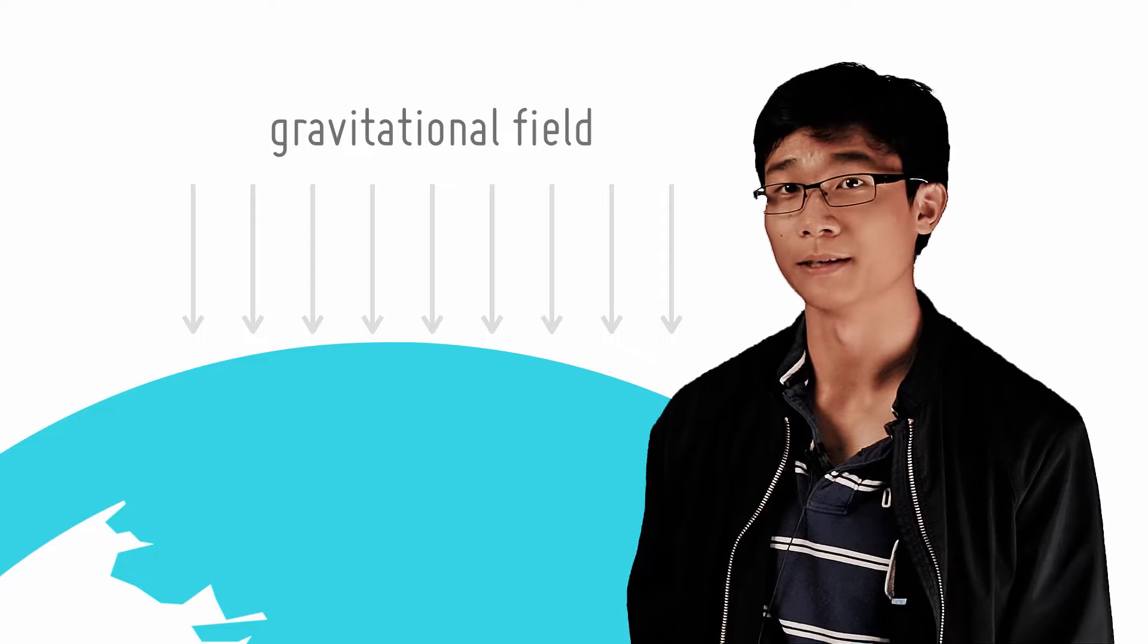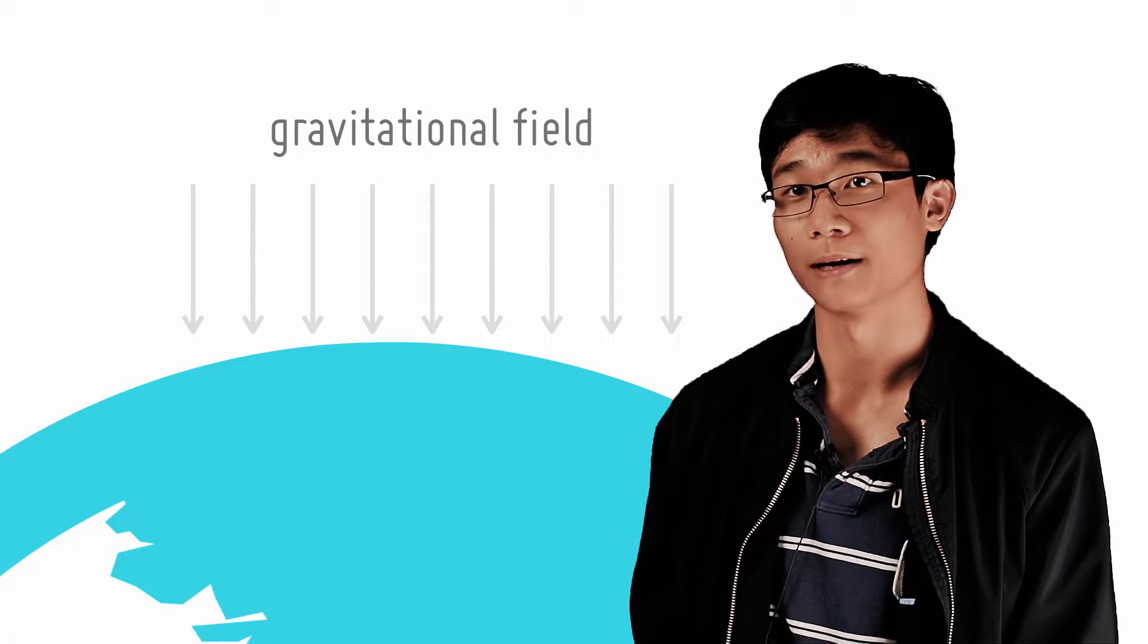Just as before, it's instructive to look at a parallel case in gravitation. Where have we encountered parallel gravitational fields? Near the surface of the Earth, the gravitational field is of the same strength, g, and pointing down.